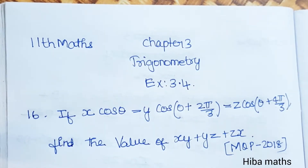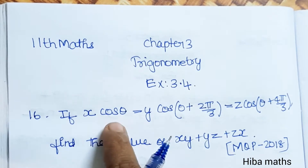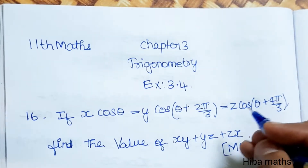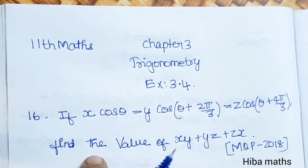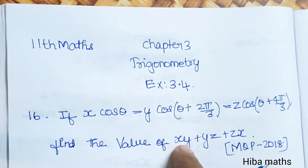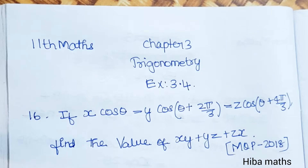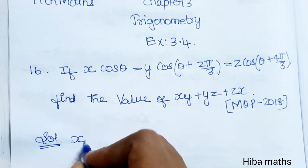Hello students, welcome to Hibamax 11th standard, Chapter 3 Trigonometry, Exercise 3.4, 16th question. If x cos θ = y cos(θ + 2π/3) = z cos(θ + 4π/3), find the value of xy + yz + zx. This is a government model question paper problem from 2018.